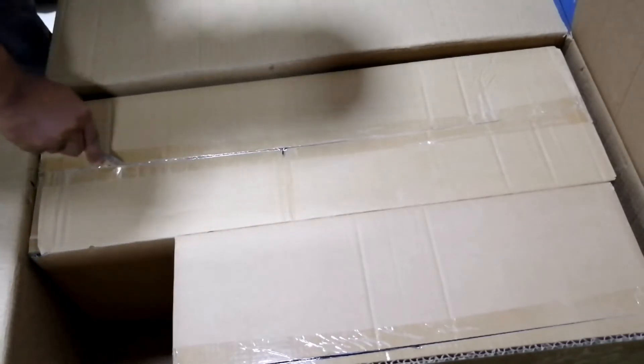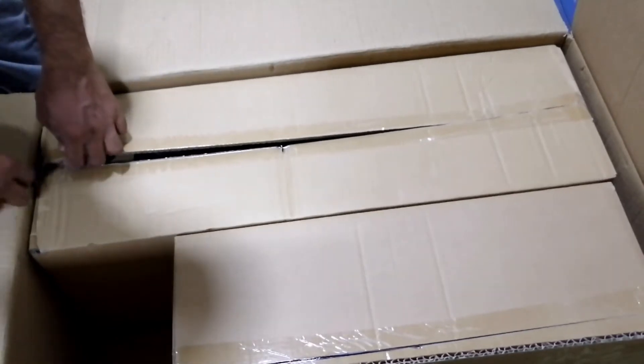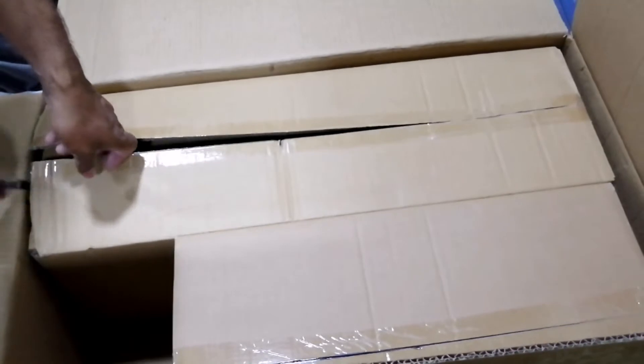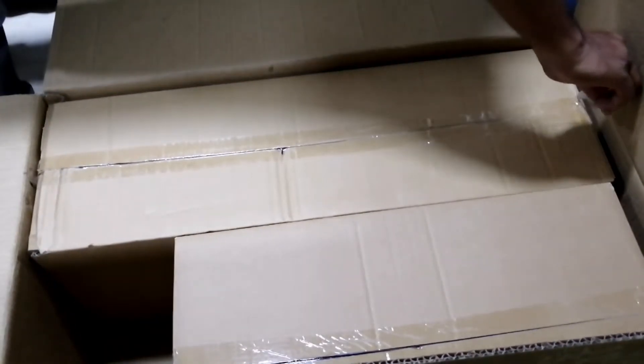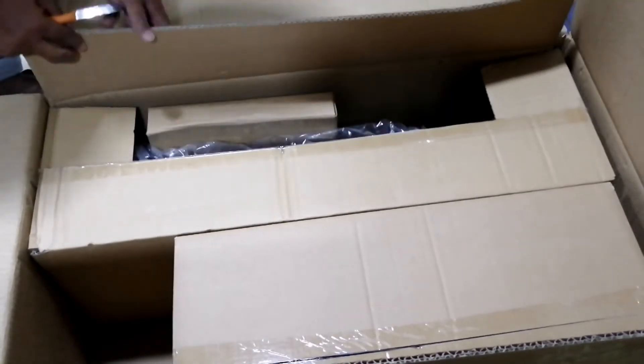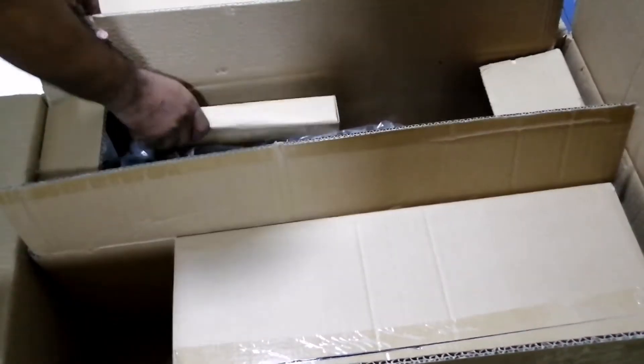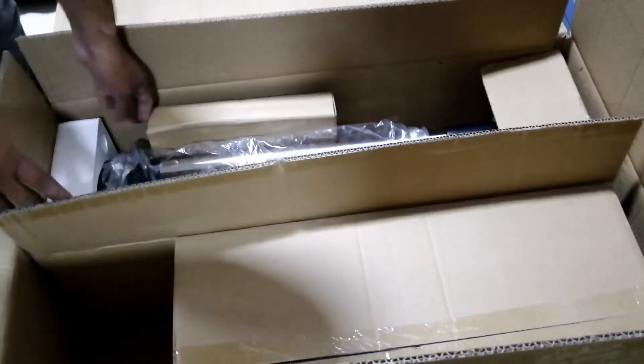NexStar 4SE specifications. Optical design: 4, 102mm, Maksutov-Cassegrain. Focal length: 1325mm, f/13. Optical coatings: StarBright XLT. Optical tube: aluminum, metallic orange. Mount: single fork arm, alt-azimuth. Dovetail: quick release tube clamp.